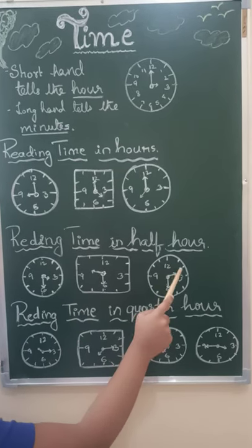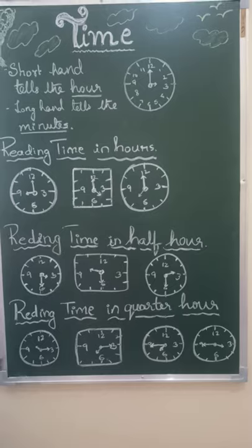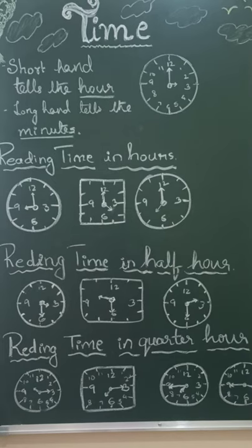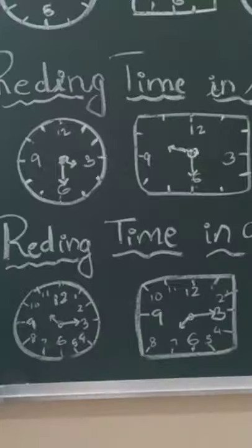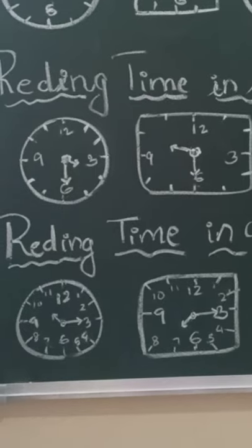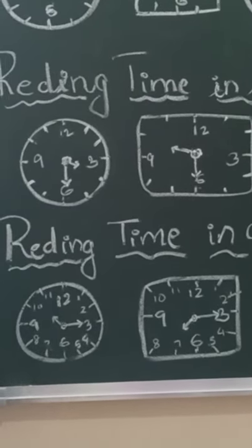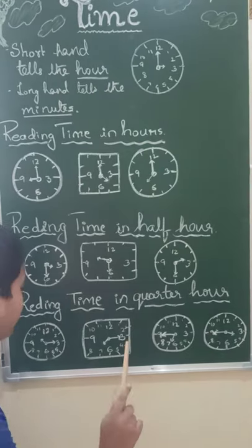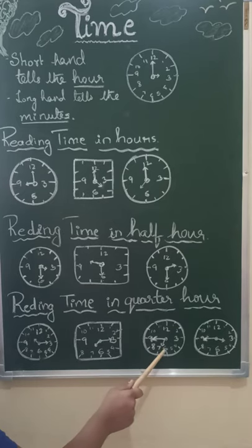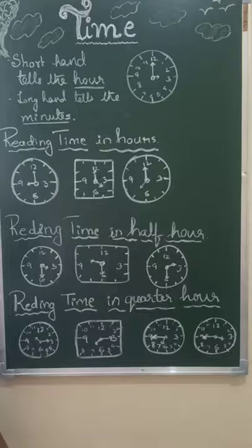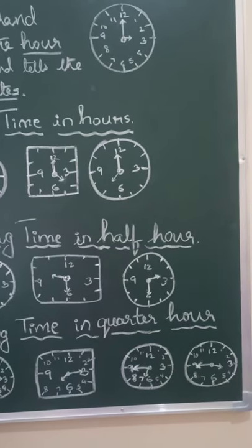This is 2:30 or we can say half past 2. Now let's learn reading time in quarter hours. For example, this is 10:15 or quarter past 10. This is 7:15 or quarter past 7. This is 6:45 or quarter to 7. This is 3:45 or quarter to 4.